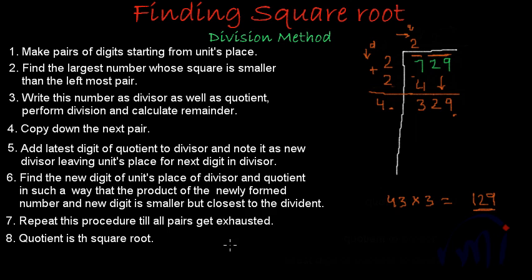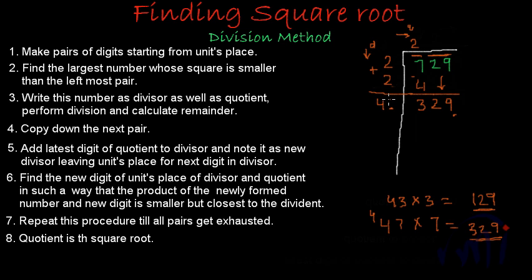Another number whose square has 9 at the units place is 7. So the number formed by putting 7 at the units place is 47. When 47 is multiplied by 7: 7 times 7 is 49, carry 4; 7 times 4 is 28, plus 4 is 32 — giving 329. So this units place gets filled by 7, and 7 comes in the quotient as well. 47 times 7 gives 329, and subtracting we get remainder 0.